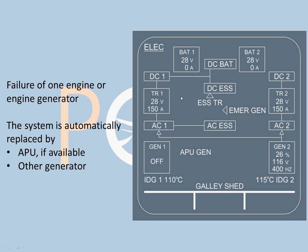Failure of one engine: one engine failed means that engine generator is also gone. It is immediately replaced by the APU if running, or the other generator — priority goes to the other generator first. The load is then shared; to shed load on generator 2, we switch on the APU. In such cases, galleys and non-essential equipment are automatically shed.